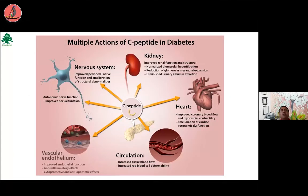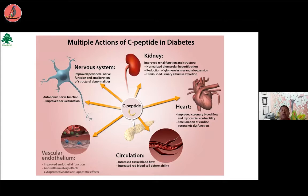C-peptide, as you all know, is secreted in equimolar amounts from the beta cells in the pancreas. I used to think it is a vestigial molecule with no role, but I learned in the last 48 to 72 hours that there are a lot of physiological roles attributed to C-peptide. C-peptide administration in animal models and human studies has shown a beneficial impact on renal function — reducing intraglomerular hypertension and reducing renal fibrosis. It has some role in neural regeneration, improving ischemic preconditioning of the heart, and overall improving endothelial dysfunction.